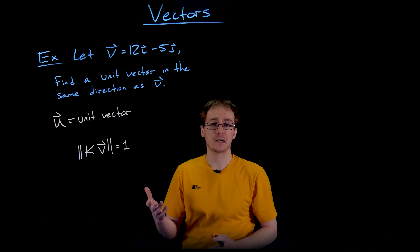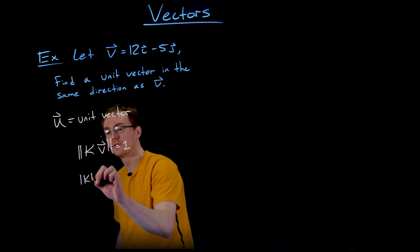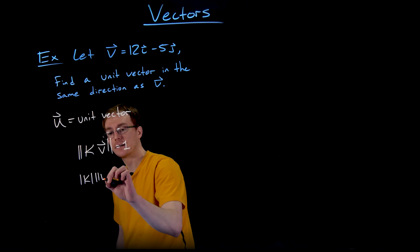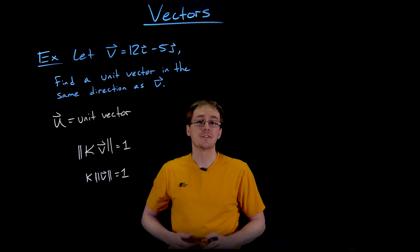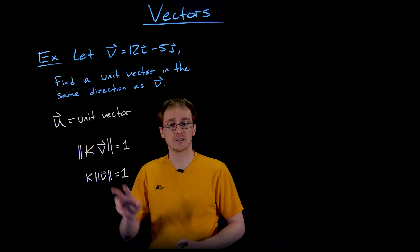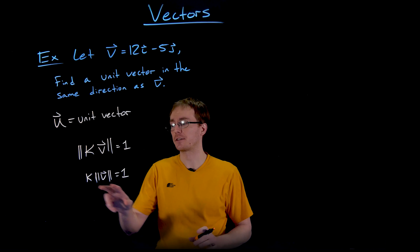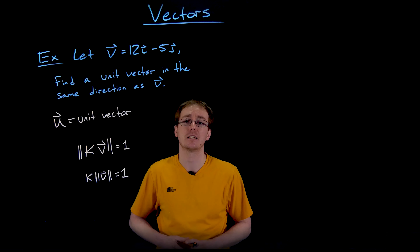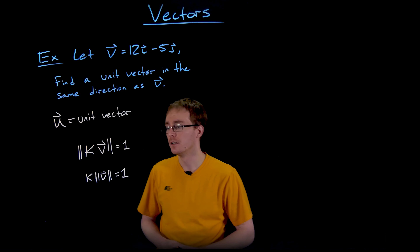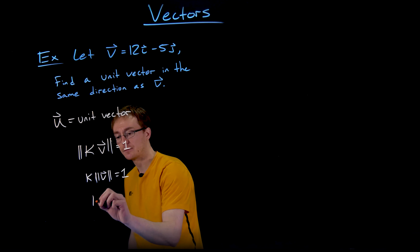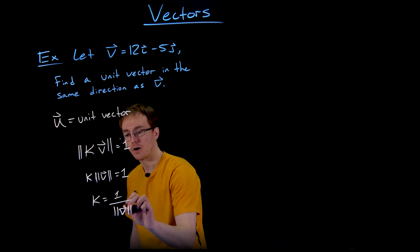Using some of our algebraic properties for vectors, we can factor this. We can write this as the magnitude of k times the magnitude of our vector v is equal to 1. It's safe to assume that k is going to be a positive constant, so we can drop the absolute values around it. If k were negative, we wouldn't be maintaining the same direction as vector v — we would be traveling in the reverse or opposite direction. So k has to be equal to 1 over the magnitude of our vector v.